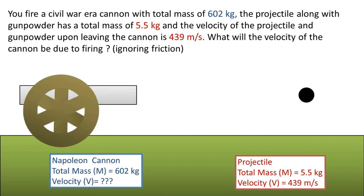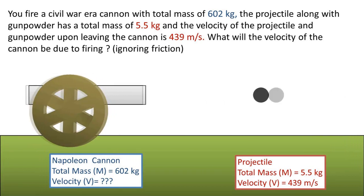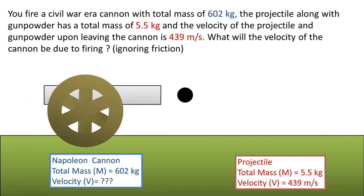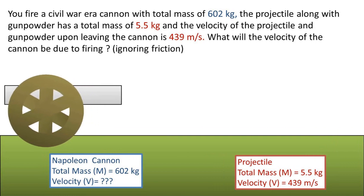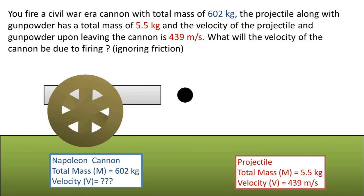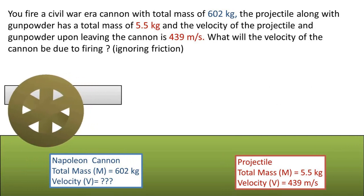The projectile along with the gunpowder has a total mass of 5.5 kilograms and the velocity of the projectile and gunpowder upon leaving the cannon is 439 meters per second. What will the velocity of the cannon be due to firing? We will be ignoring air resistance and friction in this problem.